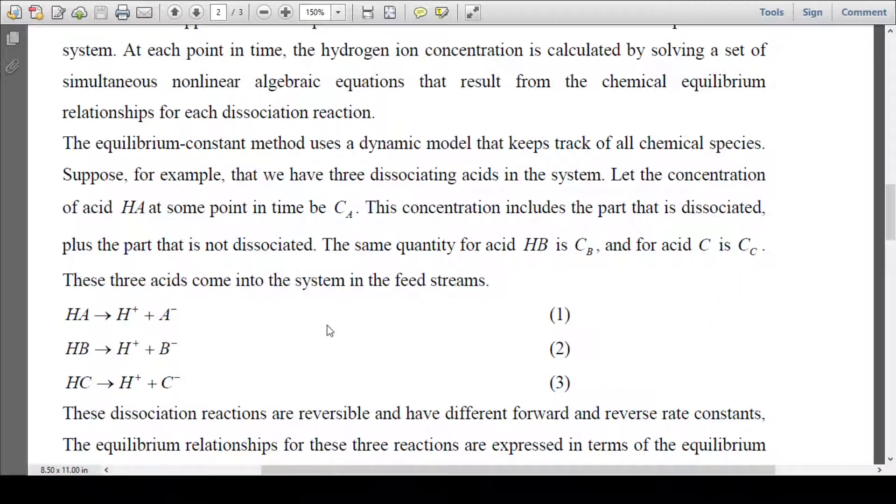If we write the dissociation equation for each acid: HA will go to H+ ion plus A- ion, then HB will go to H+ ion plus B- ion, HC will go to H+ ion plus C- ion. These are the three dissociation equations for three acids.